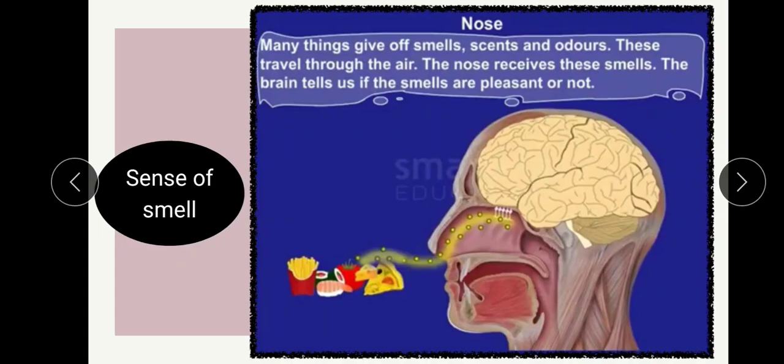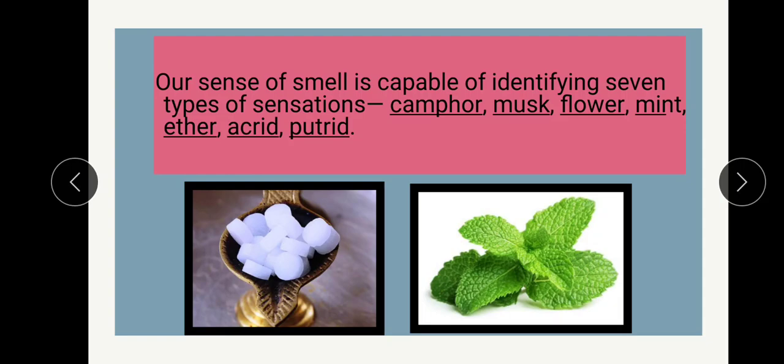Like the eyes and ears, smells are taken into the nose. From the nose, they are taken by special cells present in the nose called receptor cells - which work similarly to nerves. These receptor cells take the information and give it to the brain. The brain processes it and tells you what you are smelling and whether it is pleasant or not. We also learned about the seven types of smell, which the sense of smell is capable of identifying.